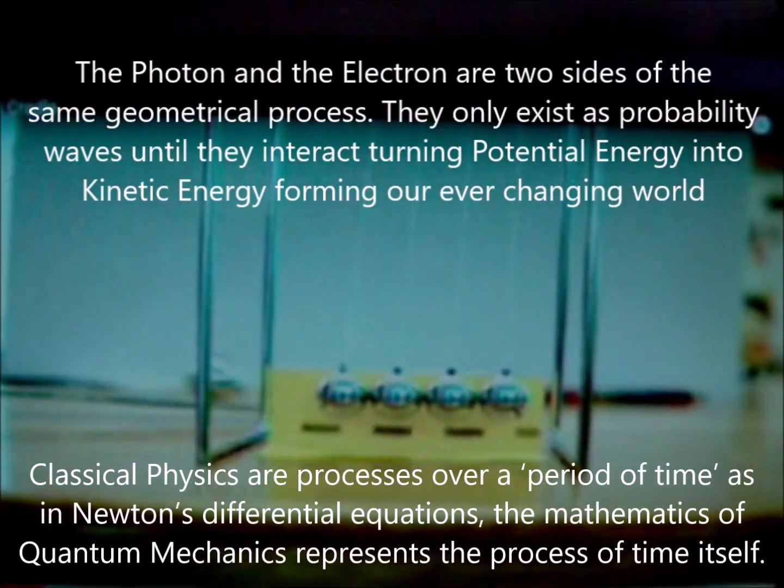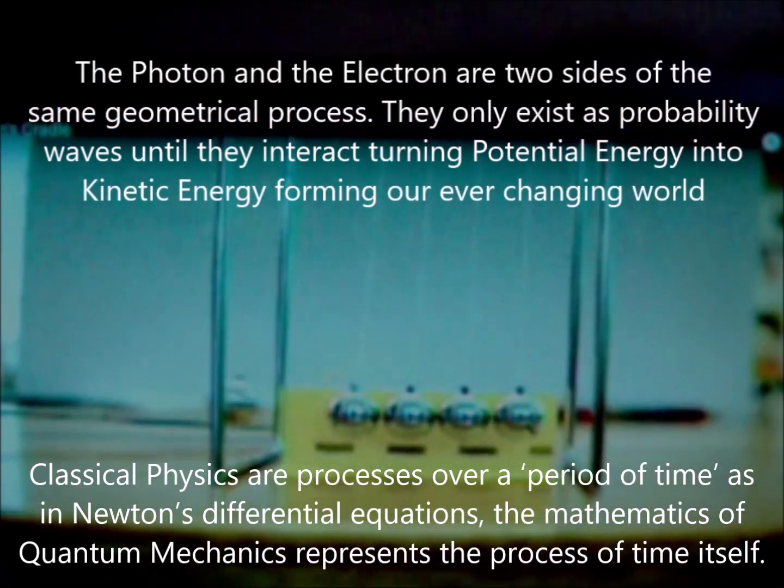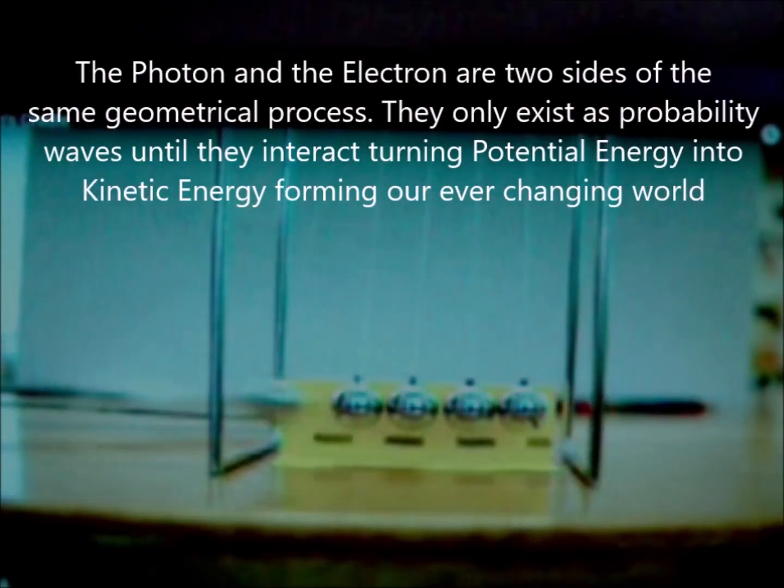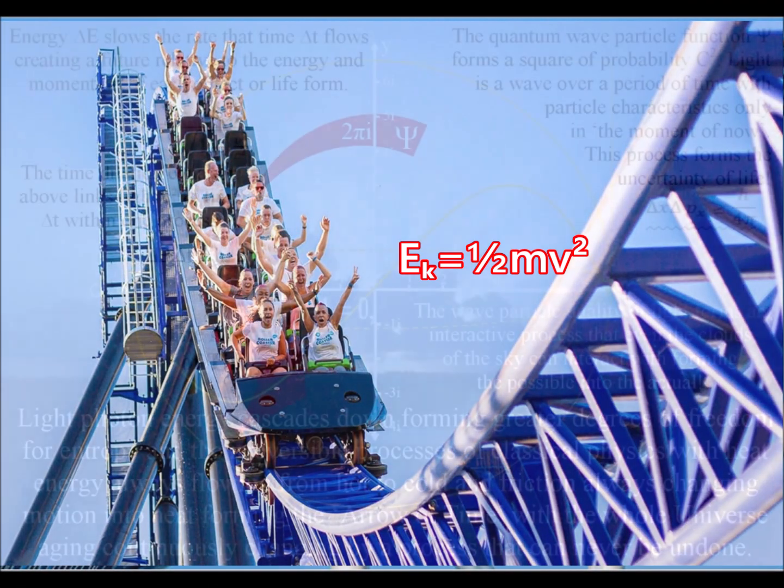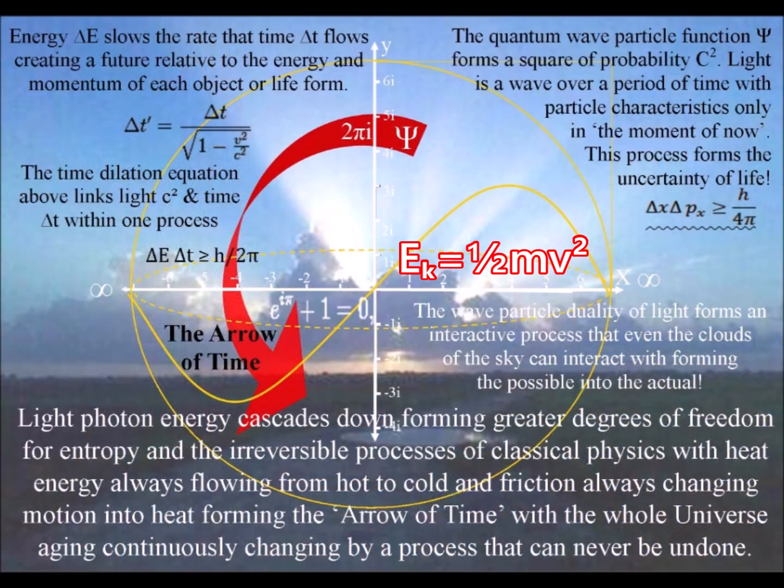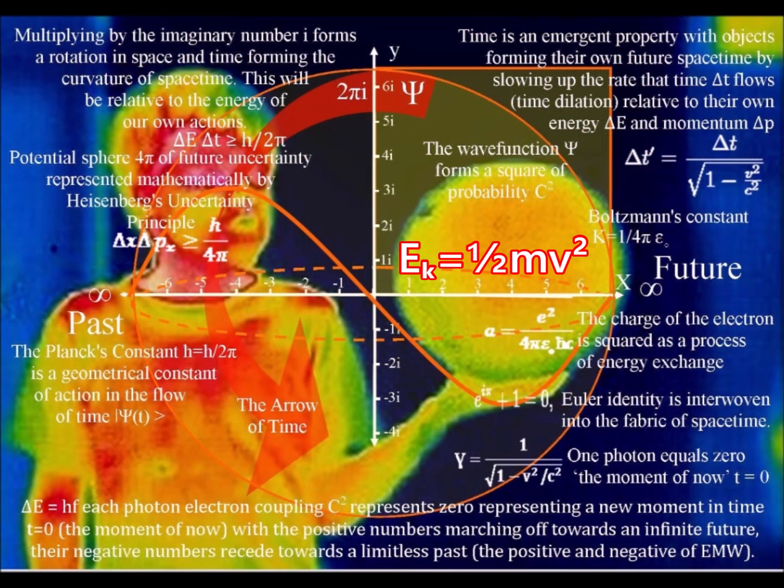We have the potential energy of what might happen continuously changing into kinetic energy of what is actually happening. We have a continuous process. Spherical symmetry will continuously form and break, and then form again. This process is relative to the energy and momentum of the atoms. Therefore, because we are made of atoms, it is relative to our actions.